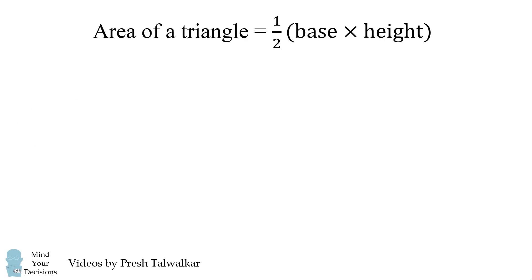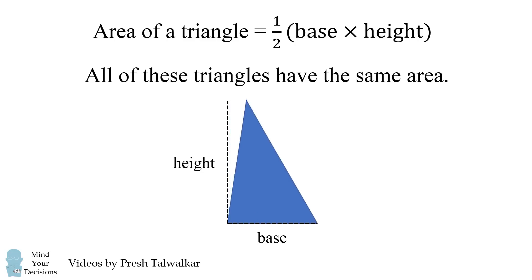The main principle in solving this problem is the formula for the area of a triangle, which is one-half its base times its height. If you have a right triangle where this is the base and this is the height, its area will be one-half its base times its height. But the formula also holds as long as a triangle has a fixed base and its height is the same. So all of these triangles will have the same area as the original right triangle.